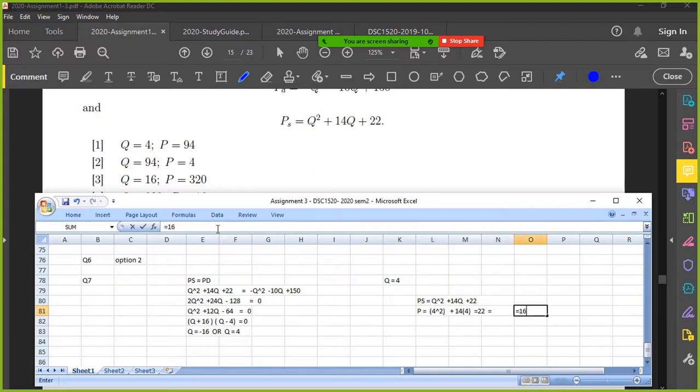Right, 4 squared is 16. 16 plus 14 times 4 minus, no, not minus, plus 22. Yeah, plus 22. This should be a plus. That should be a plus. Okay, there we go. Right, 94.